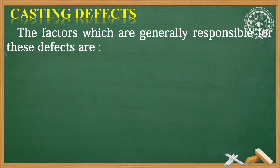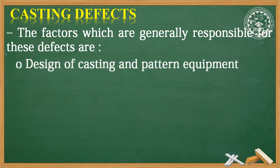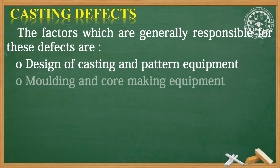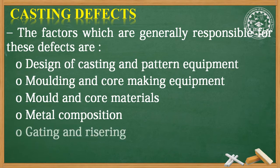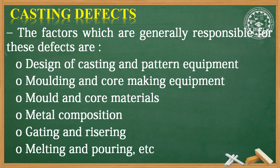The factors which are generally responsible for these defects are: first, Casting Design and Pattern Equipment; second, the molding and core making equipment and core material; third, the metal composition; fourth, gating and risering; and lastly, melting and pouring.